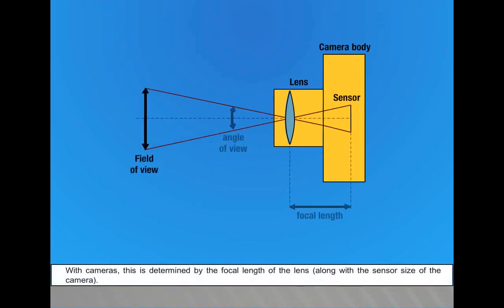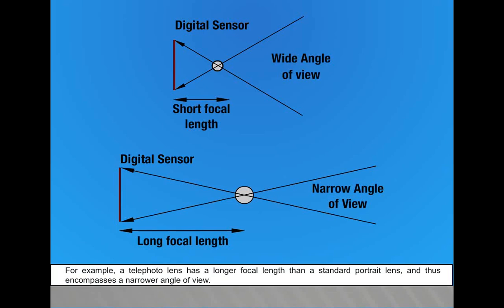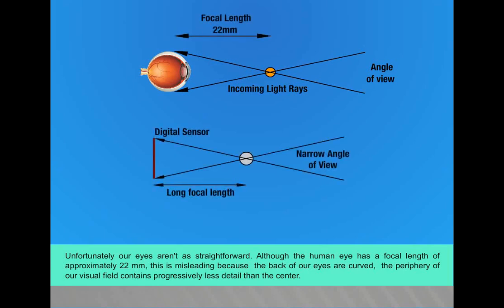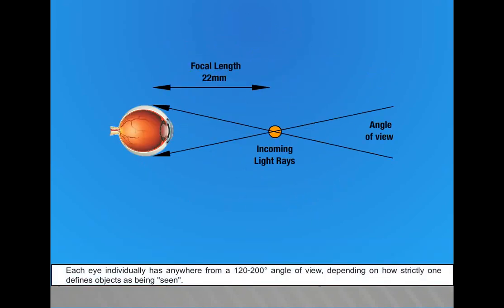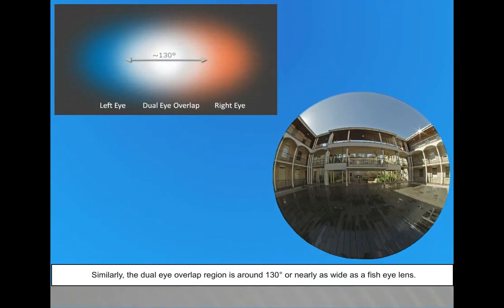Angle of view: With cameras, this is determined by the focal length of the lens along with the sensor size of the camera. For example, a telephoto lens has a longer focal length than a standard portrait lens and thus encompasses a narrower angle of view. Unfortunately, our eyes are not as straightforward. Although the human eye has a focal length of approximately 22mm, this is misleading because the back of our eyes are curved. The periphery of our visual field contains progressively less detail than the center. Each eye individually has anywhere from 120 to 200 degrees angle of view, depending on how strictly one defines an object as being seen. Similarly, the dual eye overlap region is around 130 degrees, or nearly as wide as a fisheye lens. However, for evolutionary reasons, our extreme peripheral vision is only useful for sensing motion and large-scale objects, such as a lion pouncing from your side.